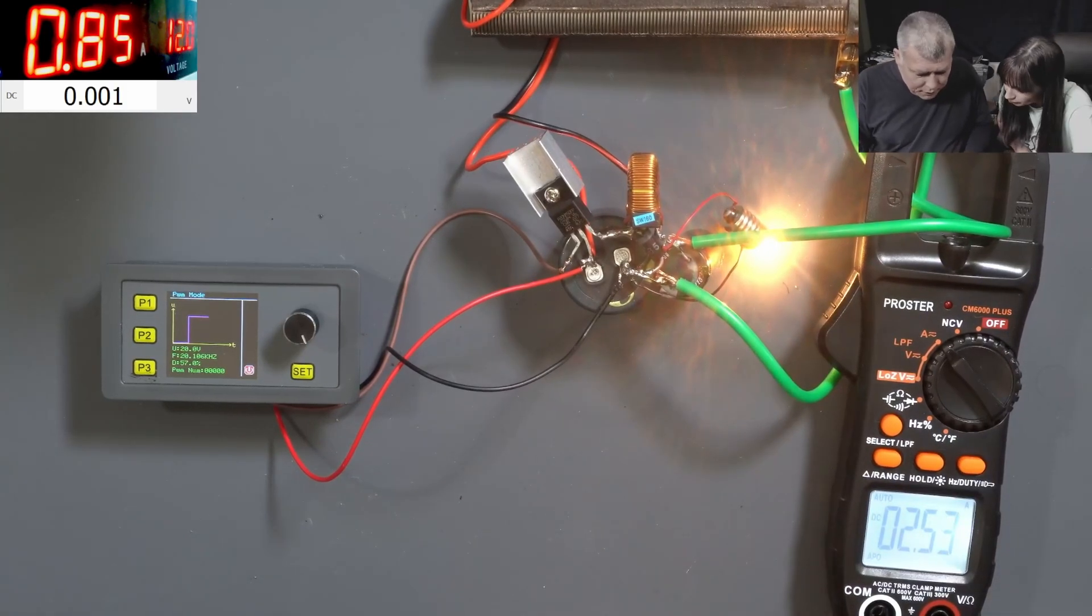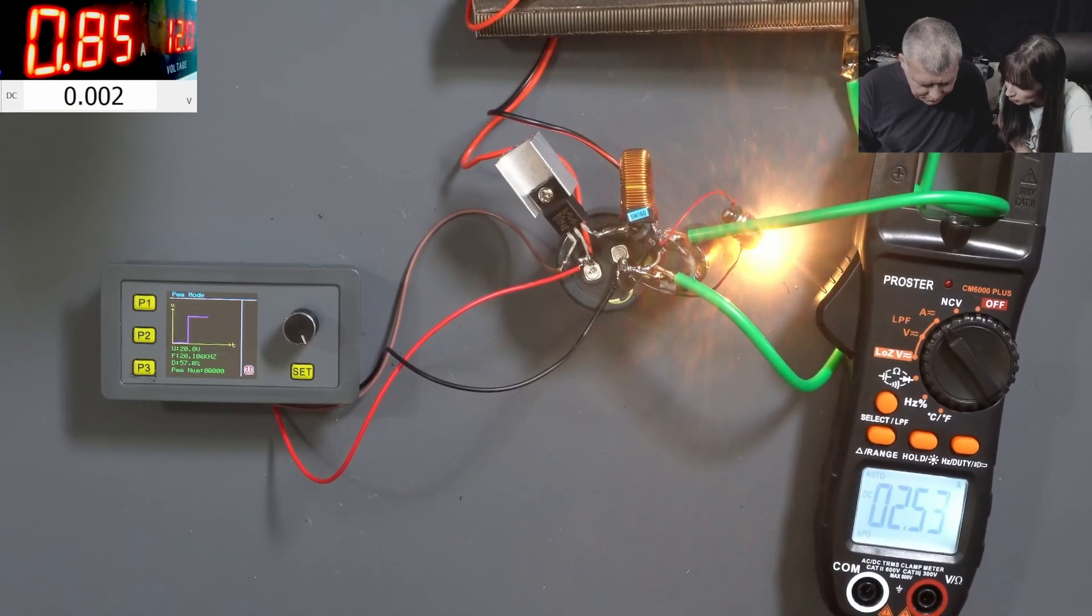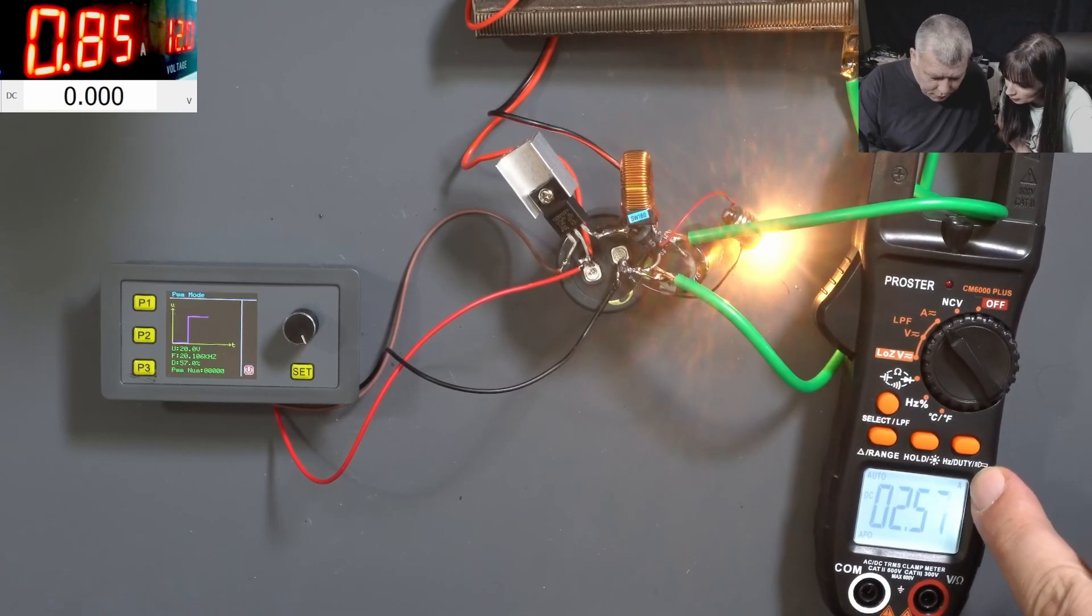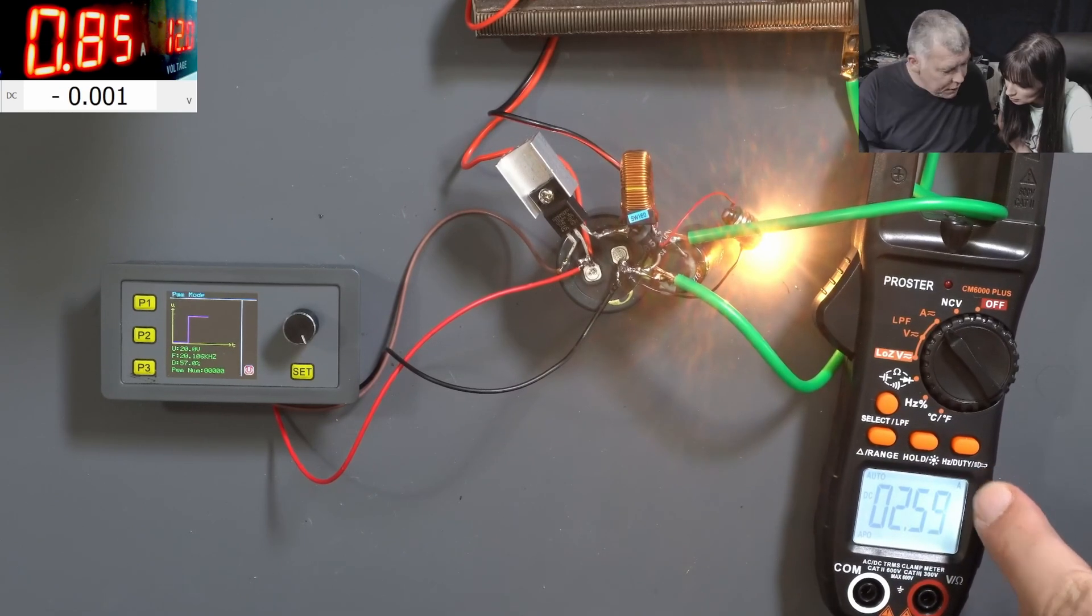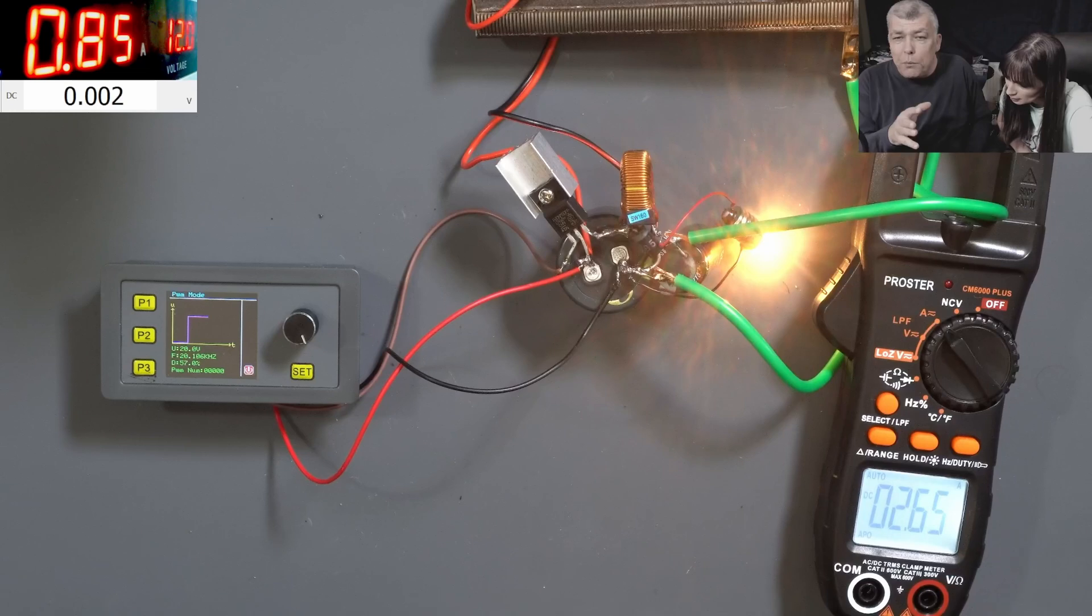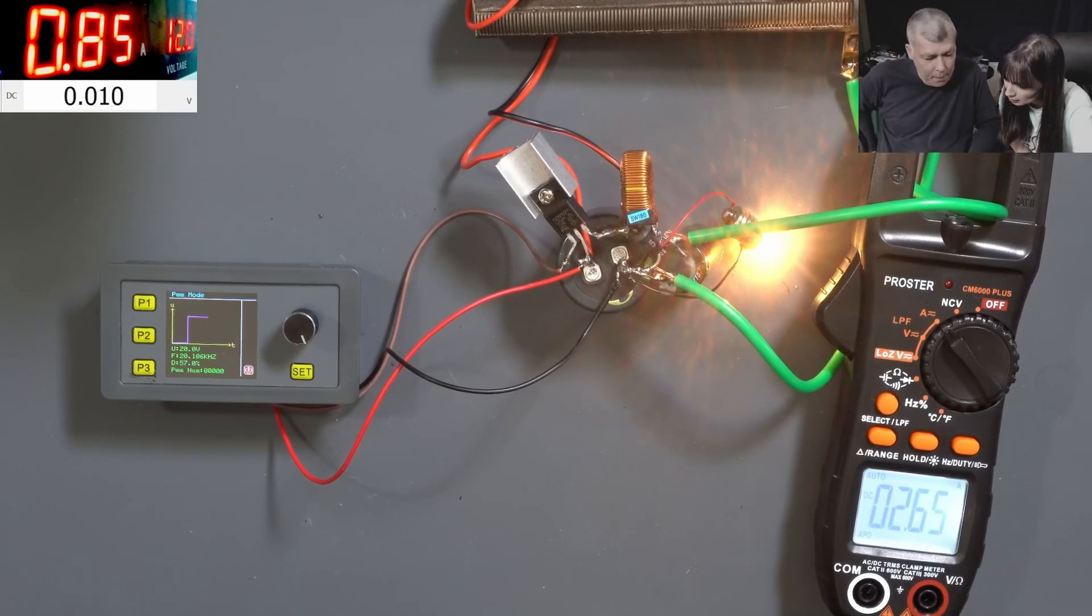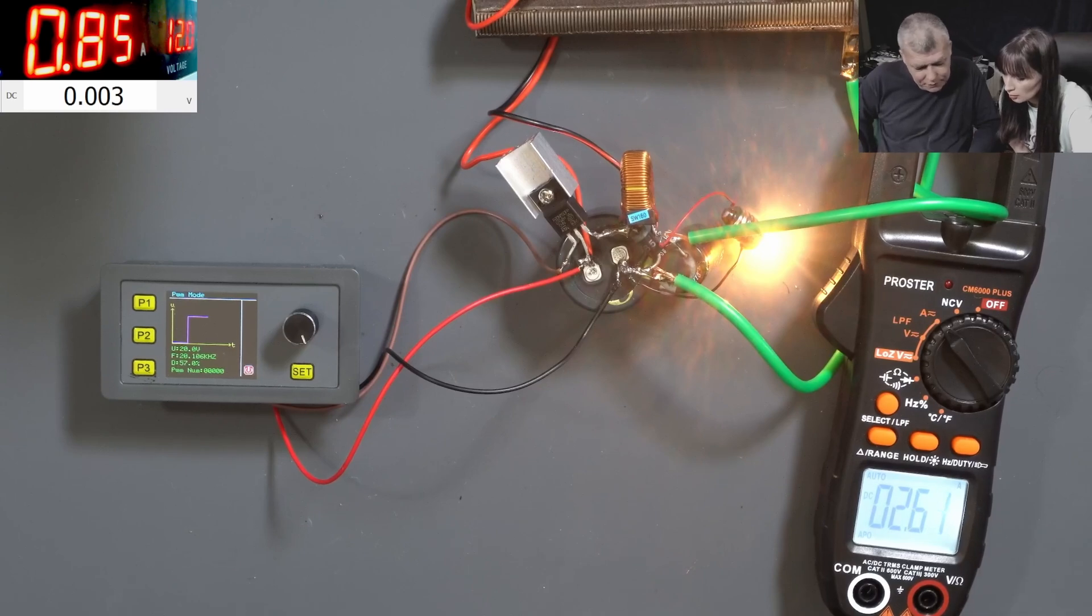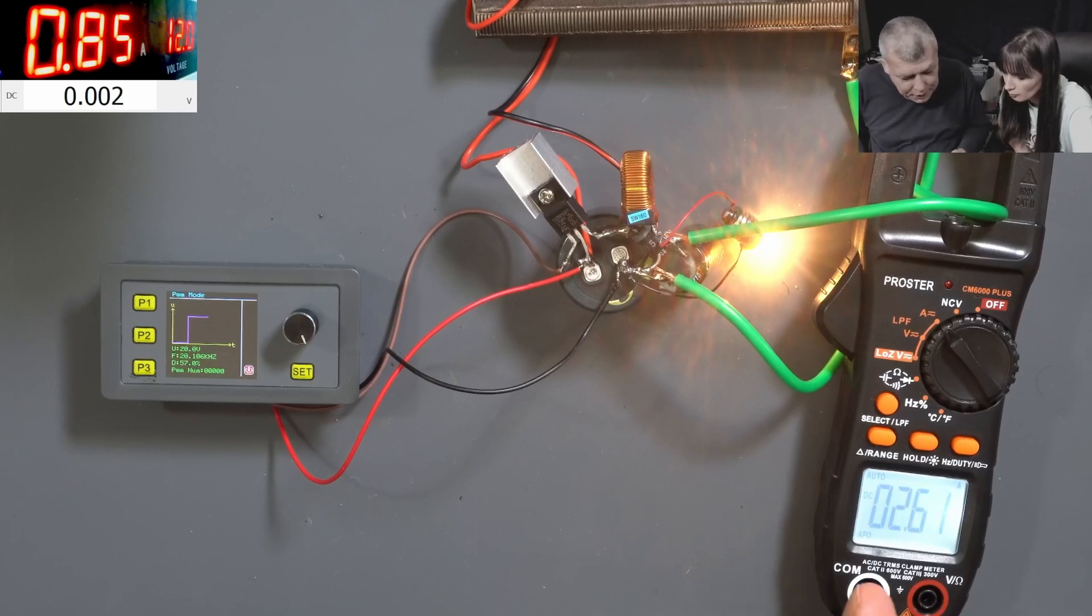So it's 253 milliamps? No, no. It's 2.5 and you have the sign there what it is. Amps. Exactly. 2.5 amps. So how much you put in the circuit? Check there. 850 milliamps. And you take out how much? 2.6 amps. Now you understand? I'm taking out more amps than we put in.